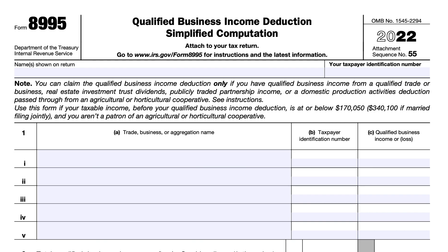If all of those three things apply, you may use Form 8995 Simplified Computation to determine your QBI deduction. If one or more of those conditions does not apply, then you must use Form 8995-A to determine your QBI deduction.